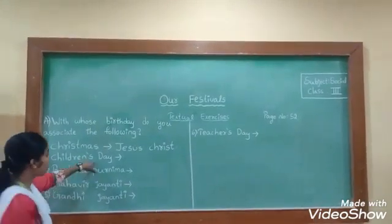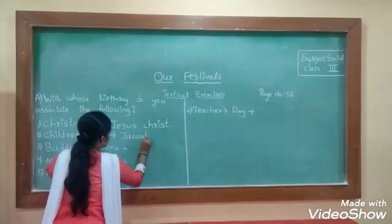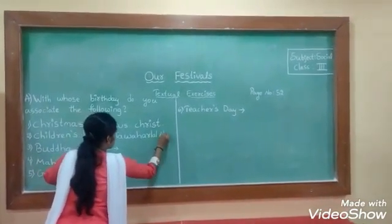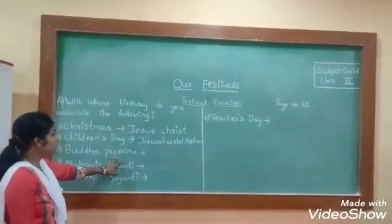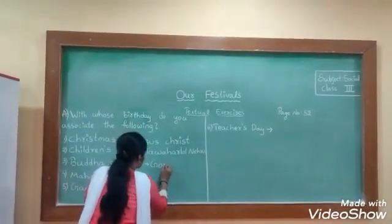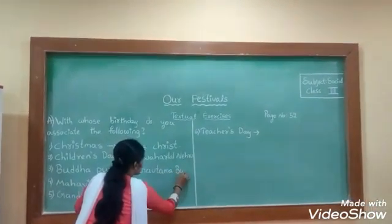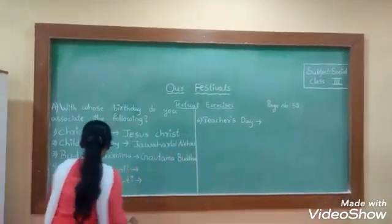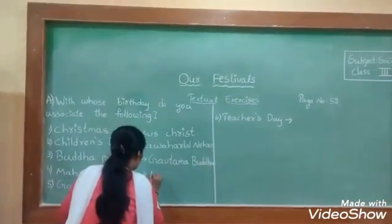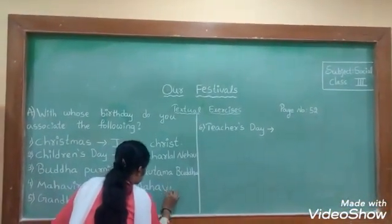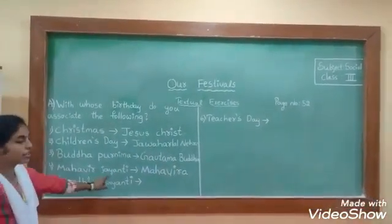Children's Day is celebrated on behalf of Jawaharlal Nehru's birthday. The next one: Mahavir Jayanti is celebrated on behalf of Mahavira's birthday.